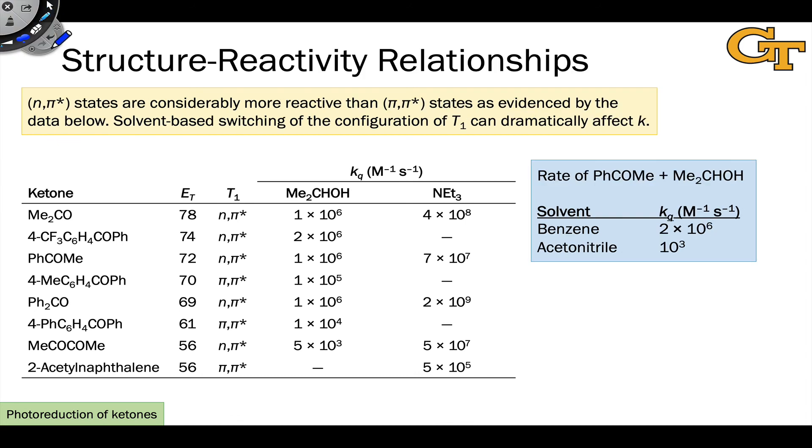This data also reveals some interesting structure-reactivity relationships. The first thing to notice is that in general, n-pi-star states are considerably more reactive in these hydrogen abstractions than pi-pi-star states. If we look at the data, we can see that, for example, this compound with a lowest energy pi-pi-star state is considerably less reactive than the very much related benzophenone, which has the lowest energy n-pi-star state.